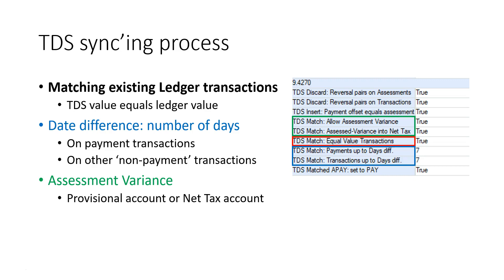This ensures the TDS assessment amount matches the sum of the ledger instalment and the newly created variance transaction. The location within the ledger of the created variance transaction is controlled by TDS match setting Assessed Variance into Net Tax. If false, the variance is placed with the ledger instalment that was matched. If true, the variance is created into the Net Tax ledger account.